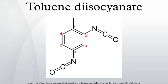Toluene diisocyanate is an organic compound with the formula CH3C6H3(NCO)2. Two of the six possible isomers are commercially important: 2,4-TDI and 2,6-TDI. 2,4-TDI is produced in the pure state, but TDI is often marketed as 80-20 and 65-35 mixtures of the 2,4 and 2,6 isomers respectively. It is produced on a large scale, accounting for 34.1% of the global isocyanate market in 2000, second only to MDI.